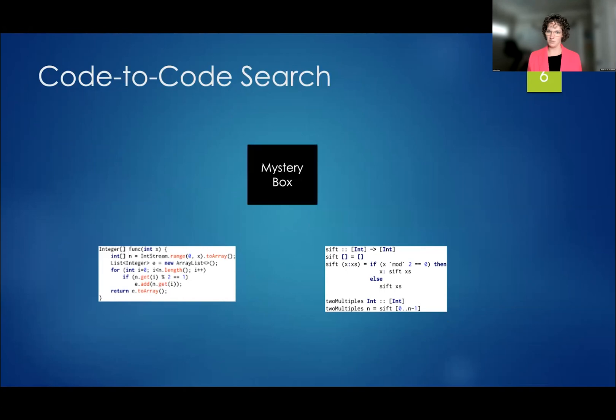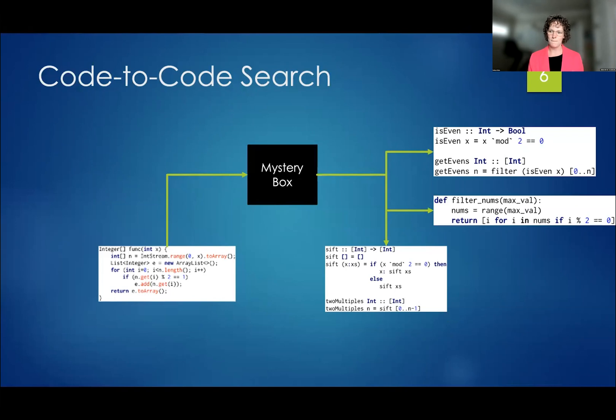So ideally there exists a mystery box. I would love for this mystery box to exist. Where input comes in and it's a query. And what comes out is code that behaves the same. In the same language, maybe in another language. And actually even more ideally, it's not just one result, but it's many results. So this is what code-to-code search could look like in an ideal environment. Where we have multi-language analysis and we are able to say this behavior is the same as this other behavior.